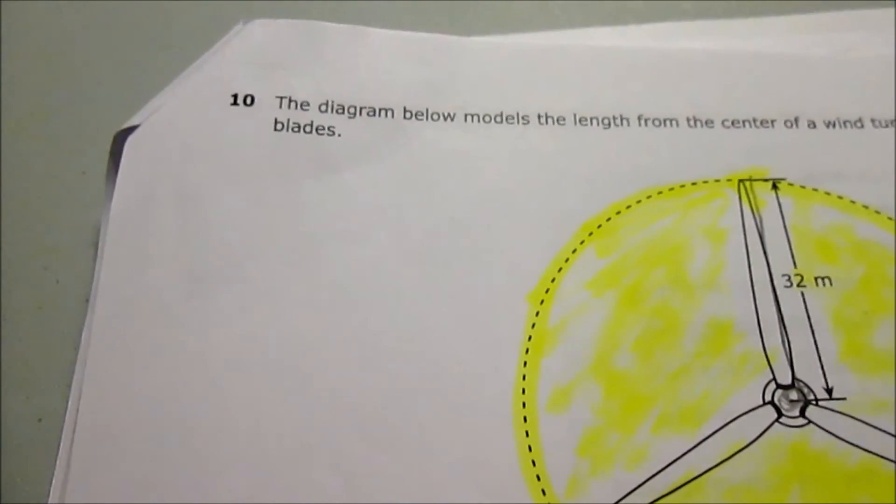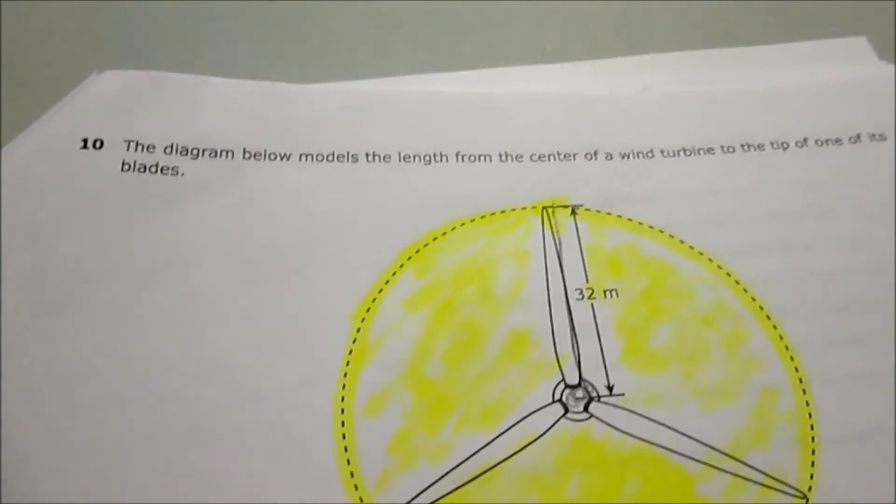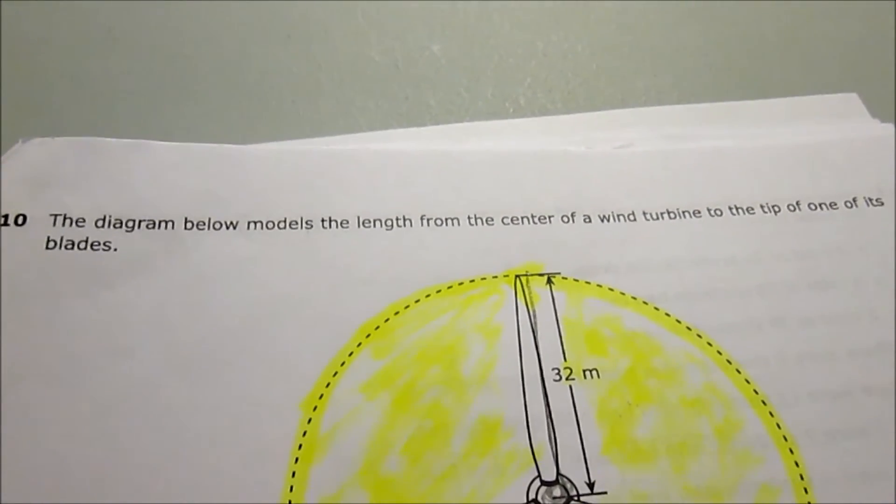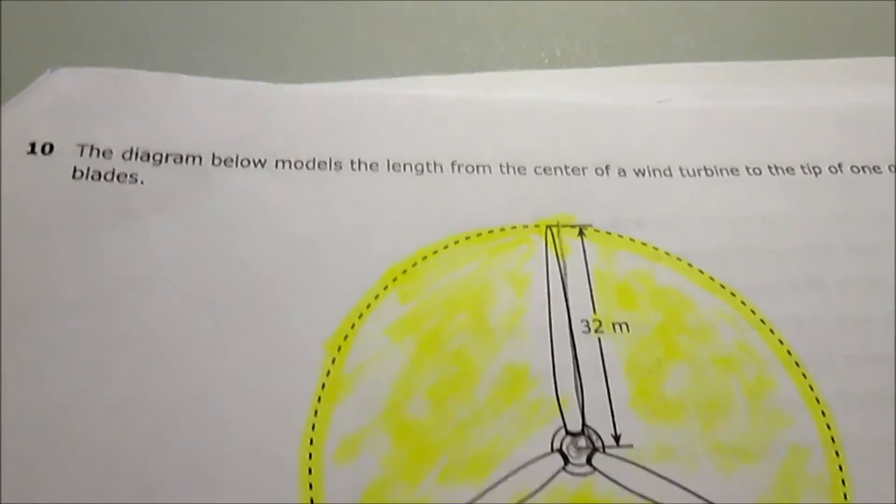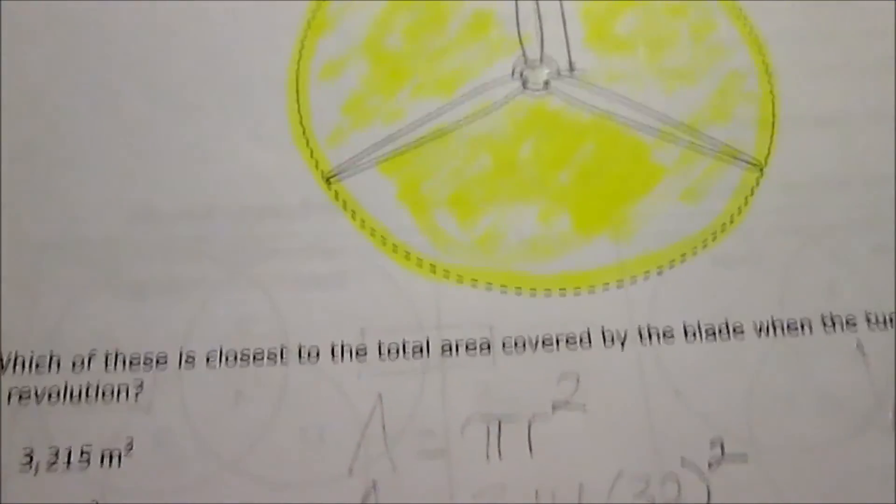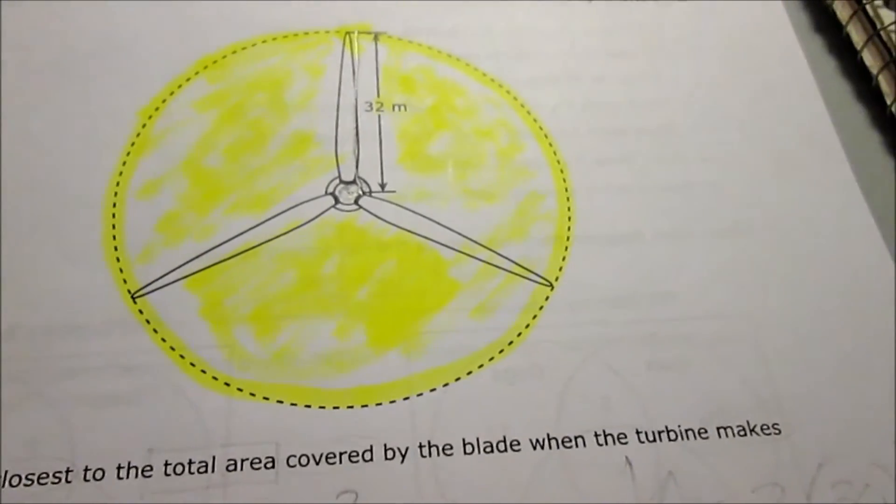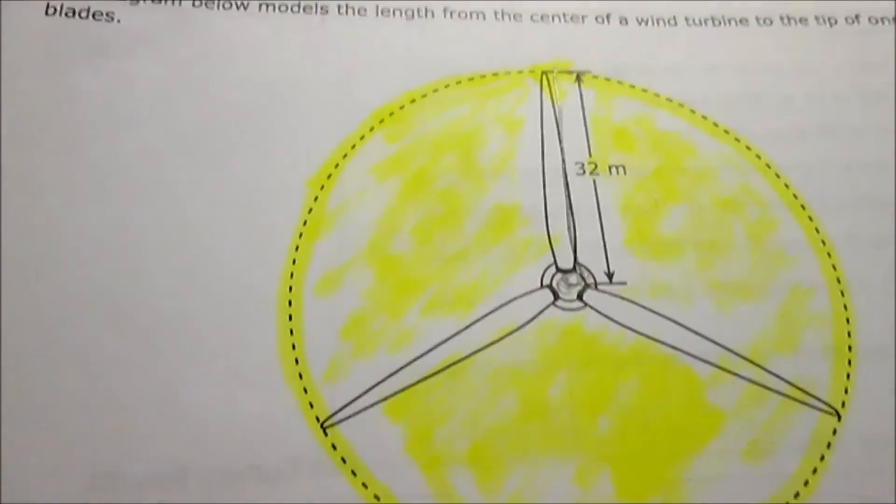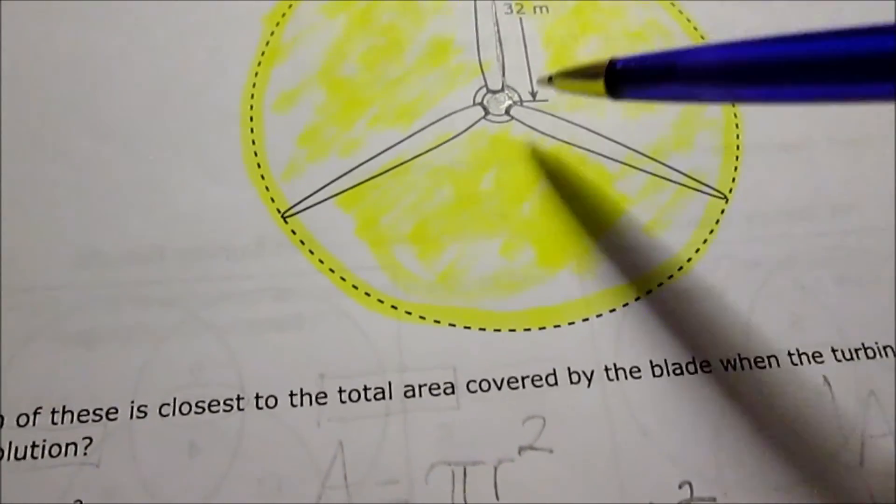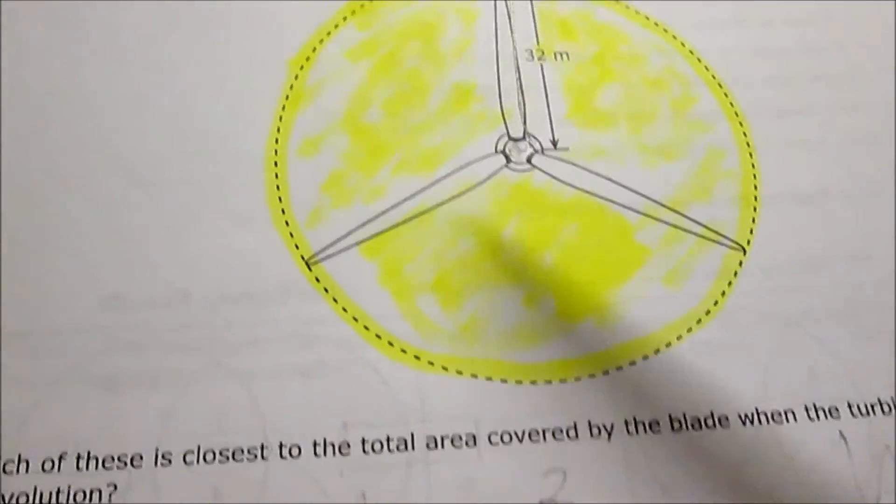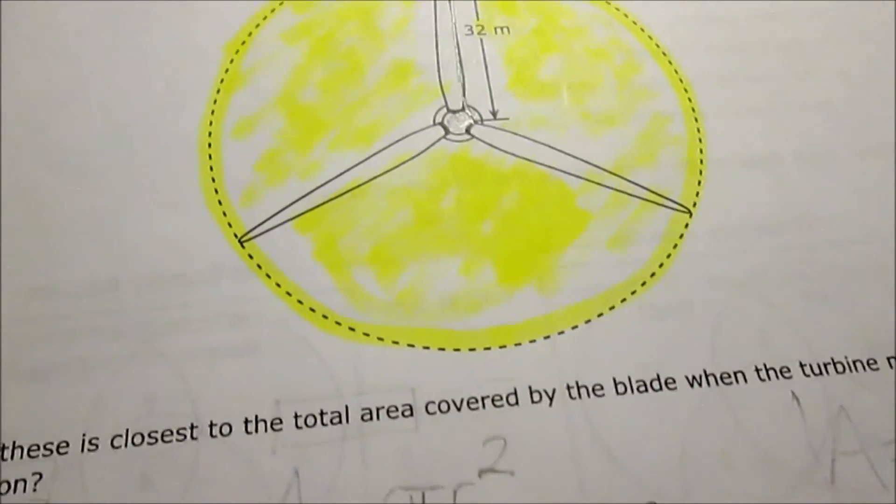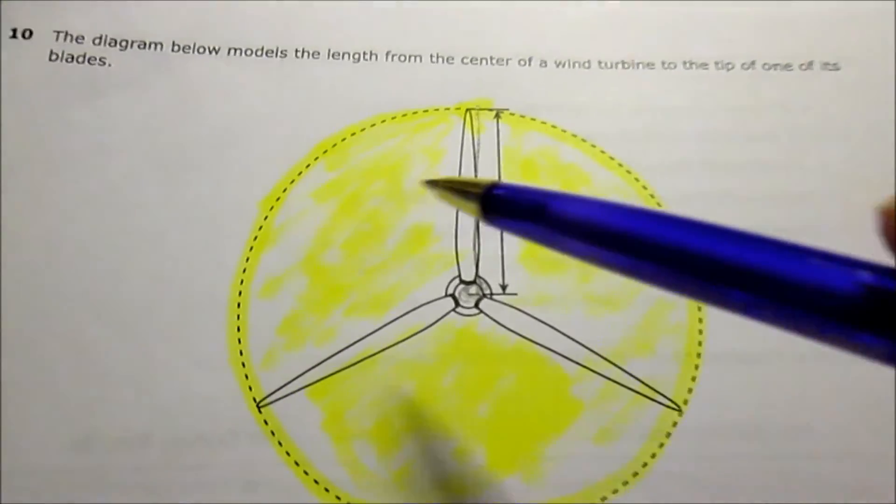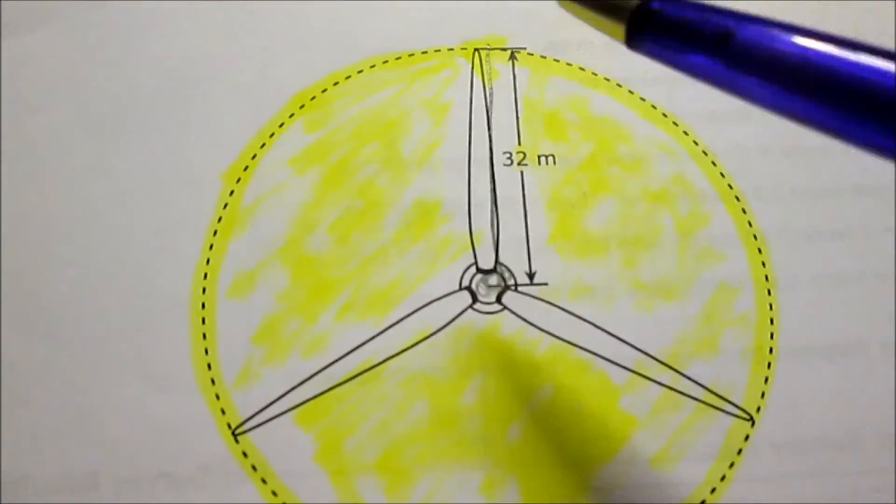Number 10: The diagram below shows the length from the center of a wind turbine to the tip of its blades. Which of these is closest to the total area covered by the blade when the turbine makes one revolution? Total area of the circle using the radius. Use the formula πr².